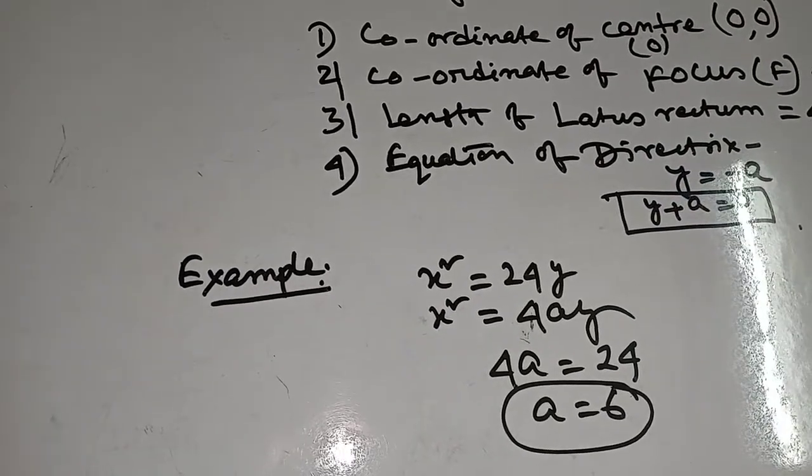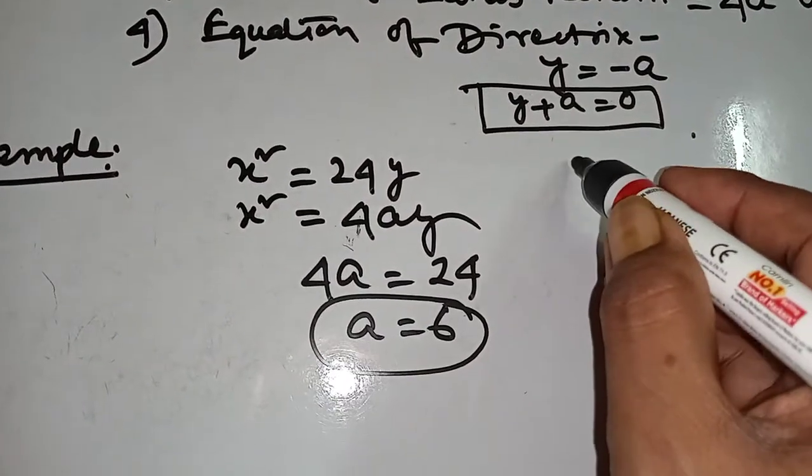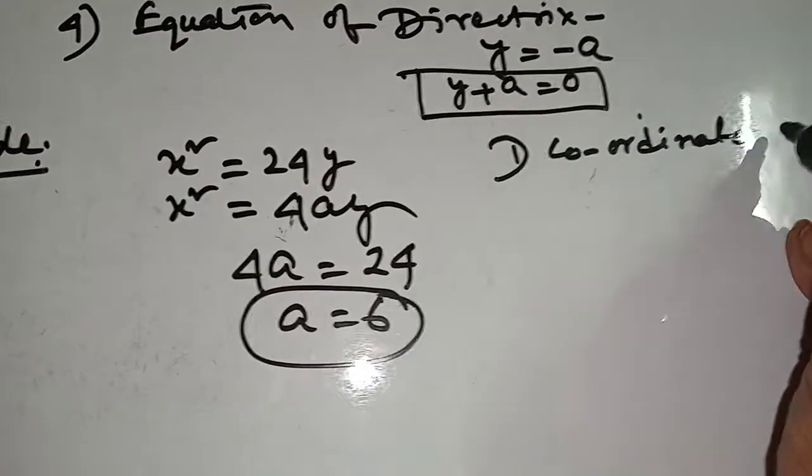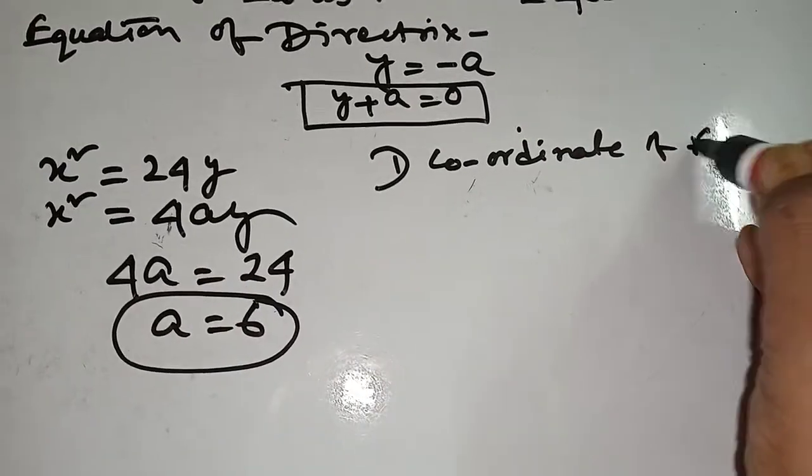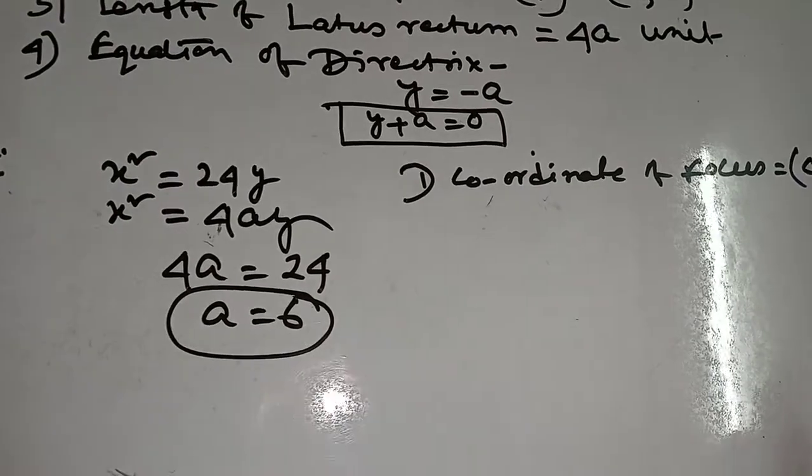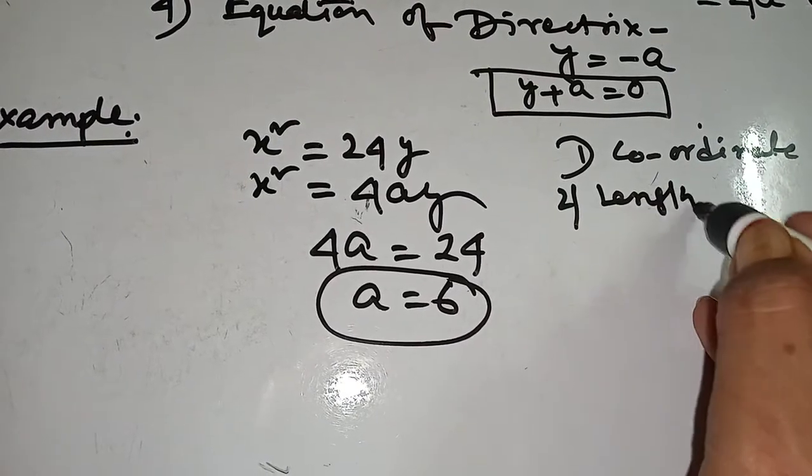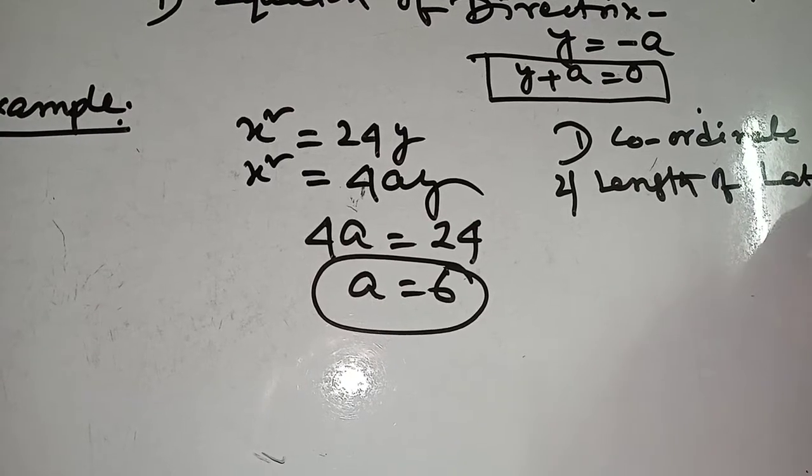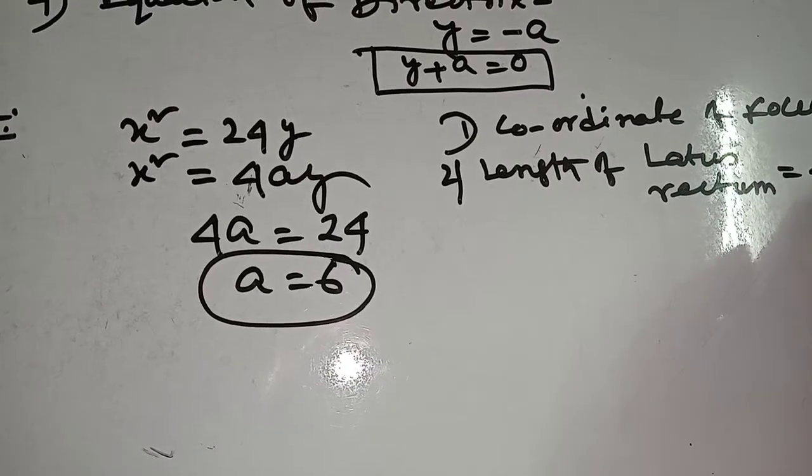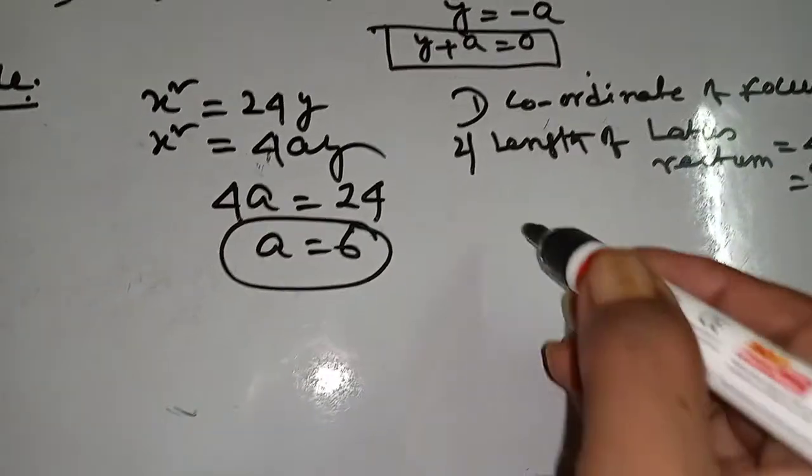When you get the value A then easily you write all the formula. 1) Coordinate of focus: 0 comma 6. 2) Length of latus rectum: 4A, 4 into 6, 24 unit.